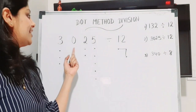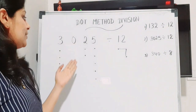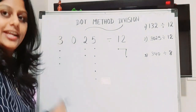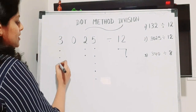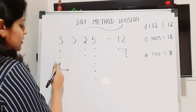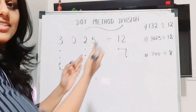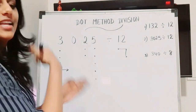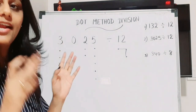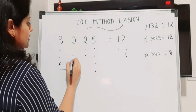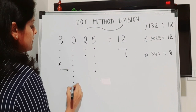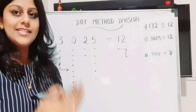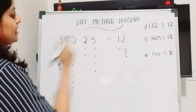In the first column we have one dot, but the second column is blank because the digit was zero. In this case we cancel one dot from the first column and give it to the next column, where one dot represents 10 dots. So we draw 10 dots in the second column.